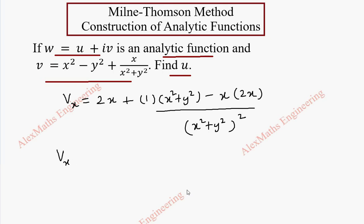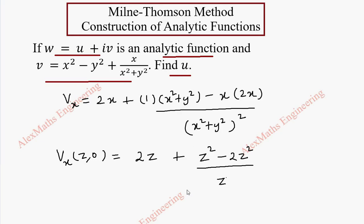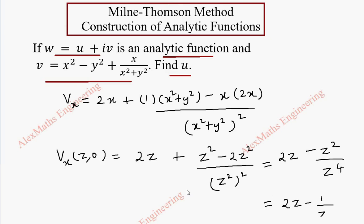Now vx will become: wherever x is we put z and wherever y is we put 0. This gives 2z + z² (with y = 0) minus 2z², all over z⁴. After simplification and cancellation, we get vx(z, 0) = (2z − 1) / z².